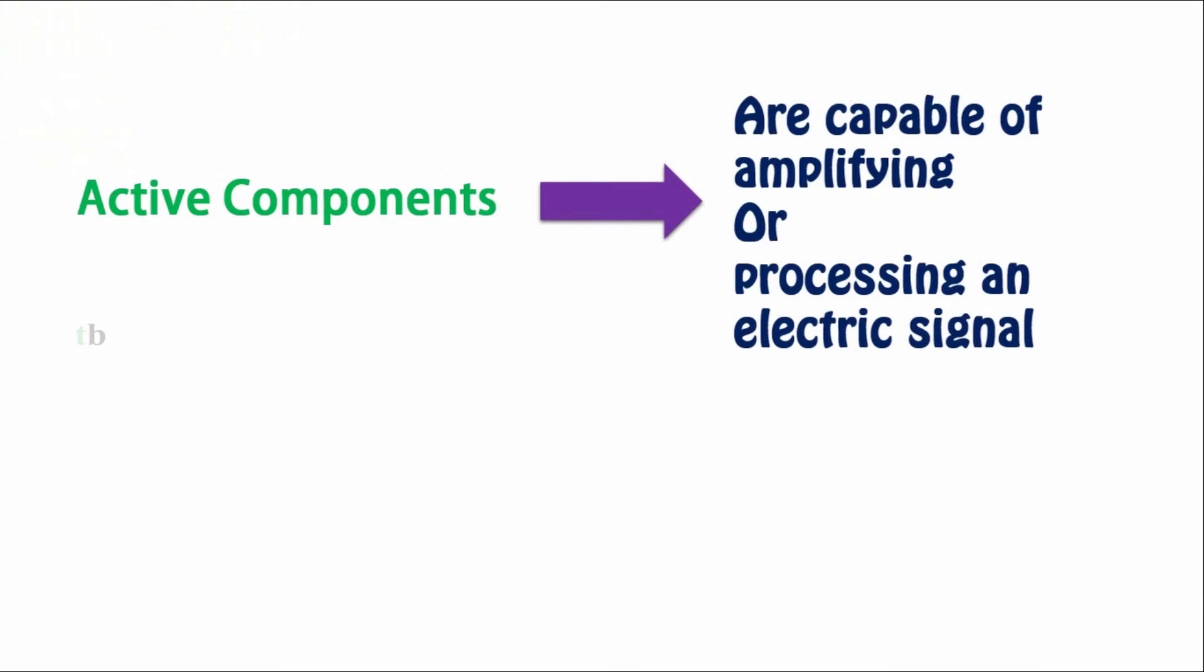Active components are capable of amplifying or processing an electrical signal. They are classified as tube type, which consists of vacuum tubes and gas tubes, and semiconductor type, which consists of BJT, FET, and Zener diode.